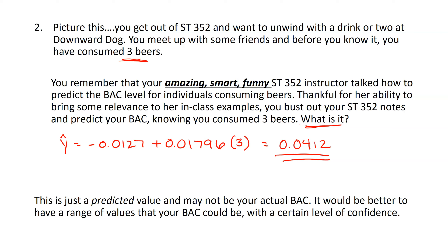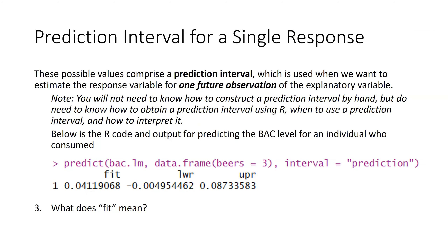We don't expect your BAC to be exactly 0.0412 — you're an individual, and this is a model based on what happens on average. Having a range of values is more realistic. If we're going to create this kind of interval, we need some level of confidence associated with it. A prediction interval is for a single response — that's you, one person. We're predicting what's happening for one future observation. That's the key when deciding between a prediction interval and a confidence interval.